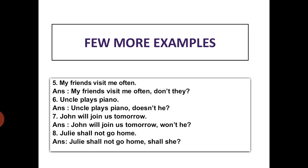'Uncle plays piano.' The sentence is in simple present tense. Here the subject is in singular form, so in this case the associative verb will be 'does.' The question tag becomes 'doesn't he?'